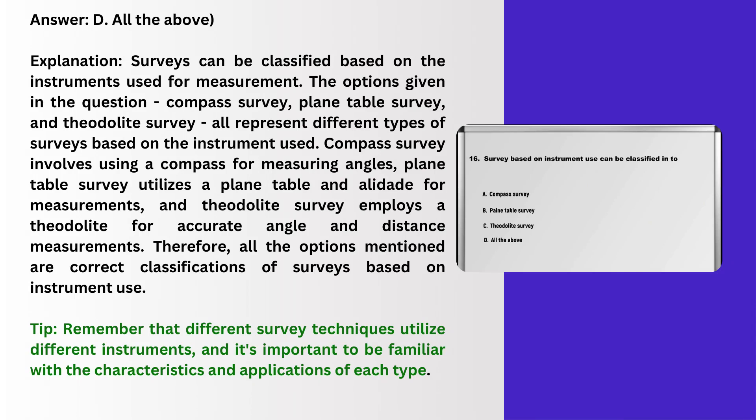Explanation: Surveys can be classified based on the instruments used for measurement. Compass survey involves using a compass for measuring angles; plane table survey utilizes a plane table and alidade for measurements; and theodolite survey employs a theodolite for accurate angle and distance measurements. Therefore, all the options mentioned are correct classifications of surveys based on instrument use. Tip: different survey techniques utilize different instruments, and it's important to be familiar with the characteristics and applications of each type.